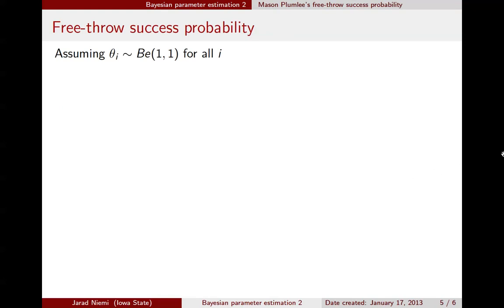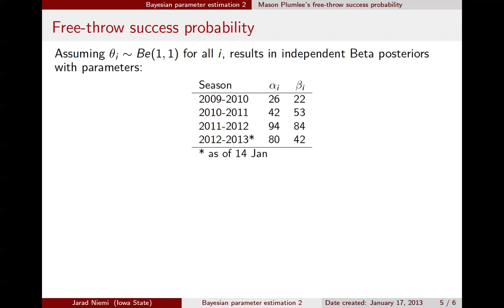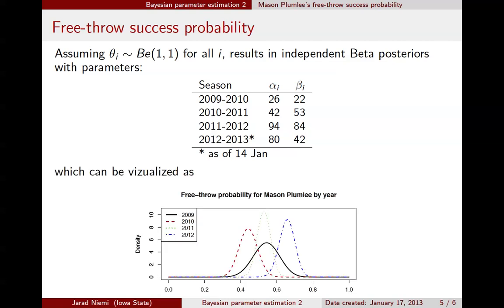So now if we put an actual prior, where we've assigned values for alpha i and beta i of 1 and 1, then we can find our posterior. Here's the posterior, the alphas and betas for the four different seasons. And we can actually plot their posteriors, where here we have the solid black line is for 2009, the red dashed line is for 2010, the green dotted line is 2011, and the blue dashed dotted line is for 2012. So in particular, it looks like he is doing better this season, but we'd like to assign a numerical value for what's the probability that he's doing better.